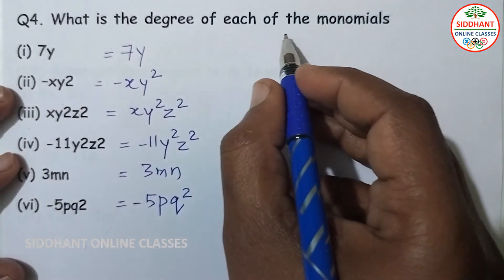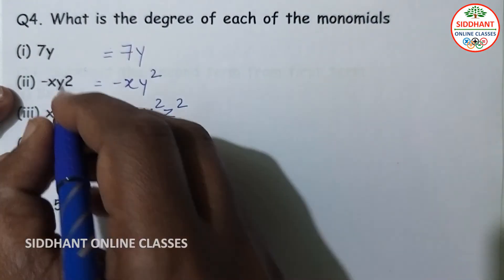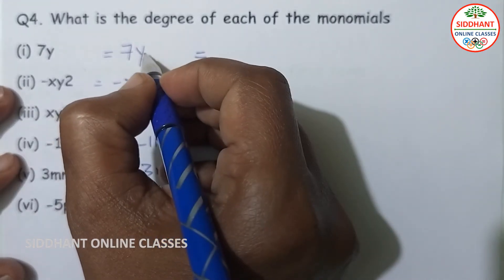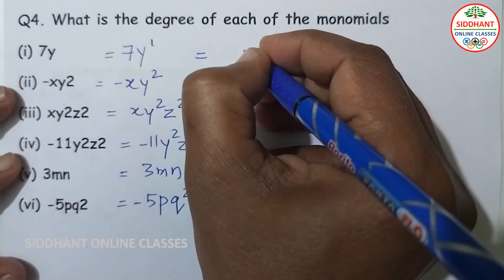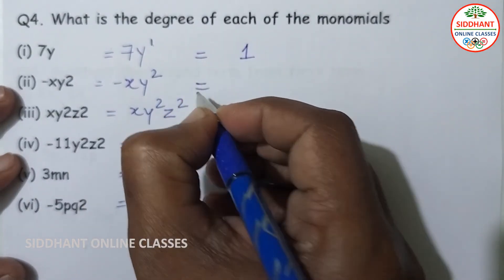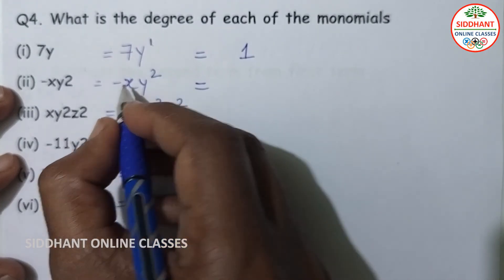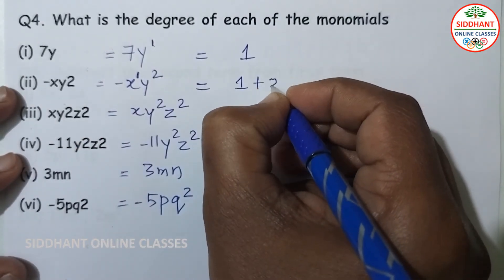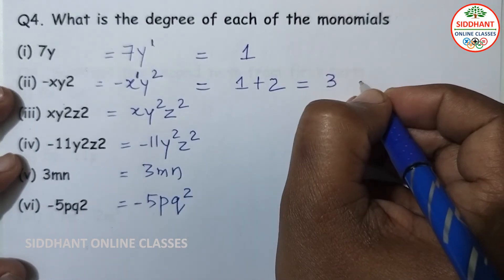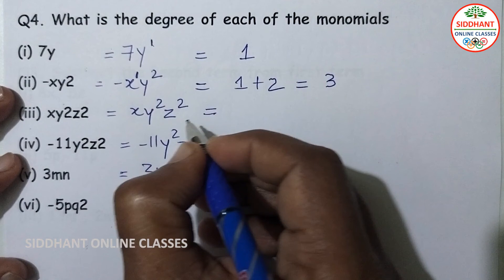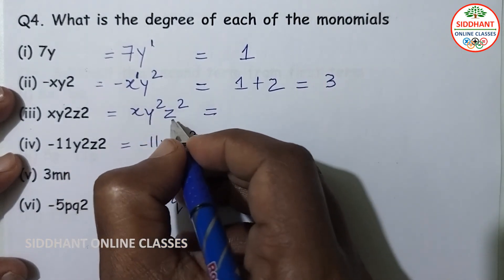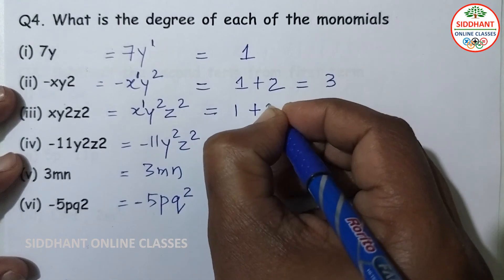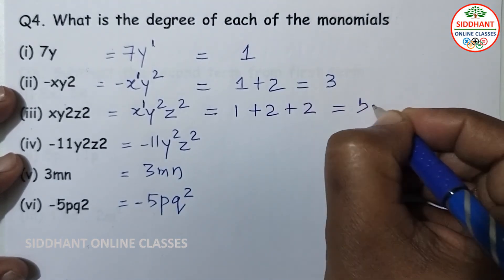Question number 4: find the degree of each of the following monomials. First — 7y — y has degree 1, so the degree is 1. Second — minus xy square — x has degree 1 and y has degree 2, so total degree is 1 plus 2 equals 3. Third — xy square z square — degrees are 1 plus 2 plus 2 equals 5.